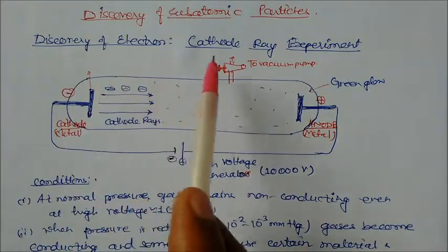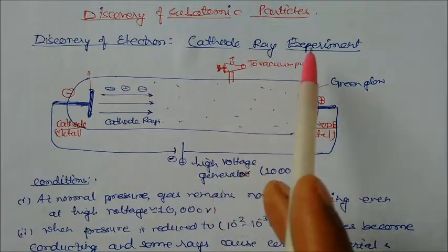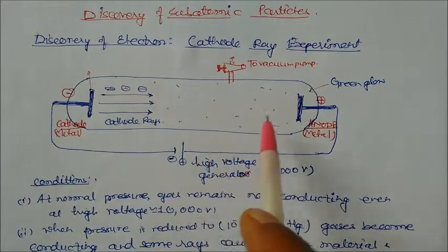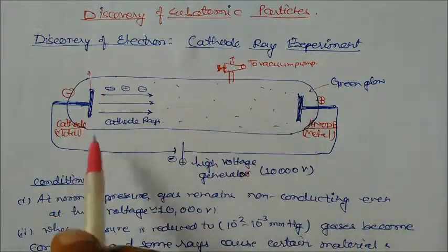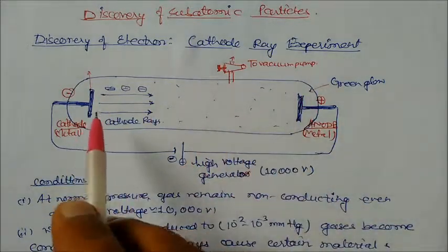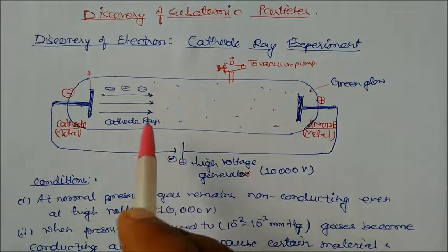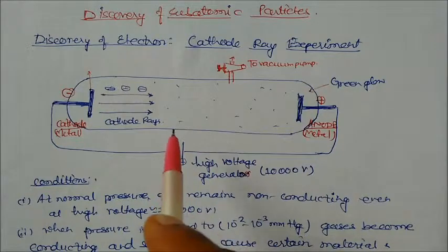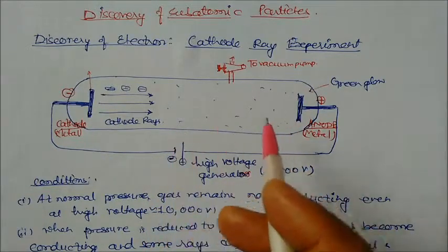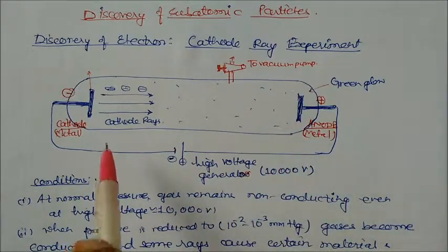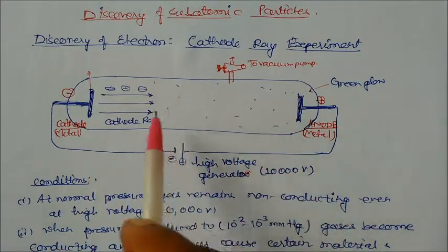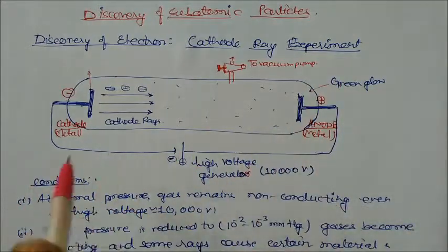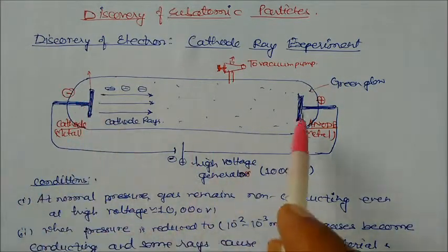Discovery of the electron - cathode ray experiment. This is the Crookes tube, also called the discharge tube. It is just like a television - a television is also a discharge tube. About 20 years back we were using the CRT tube, which means cathode ray tube or discharge tube.